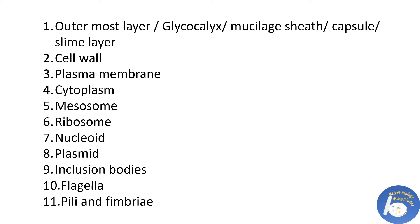In this lecture series we are going to cover different parts of the bacterial cell, which are: outermost layer, cell wall, plasma membrane, cytoplasm, mesosome, ribosome, nucleoid, plasmid, inclusion bodies, flagella, pili and fimbriae.